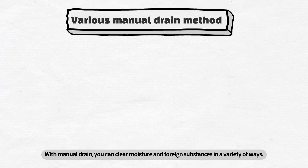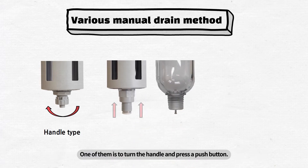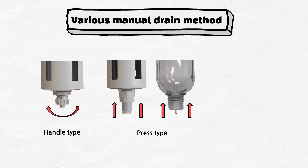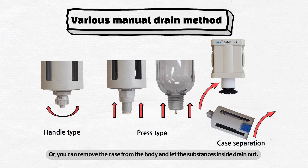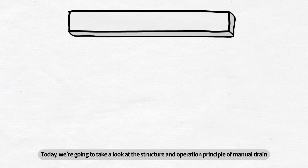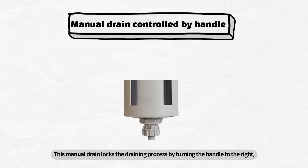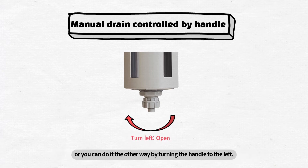With manual drain, you can clear moisture and foreign substances in a variety of ways. One of them is to turn the handle and press a push button. Or, you can remove the case from the body and let the substances inside drain out. Today, we are going to take a look at the structure and operation principle of manual drain controlled by the handle. This manual drain locks the draining process by turning the handle to the right, or you can do it the other way by turning the handle to the left.